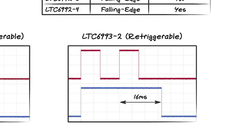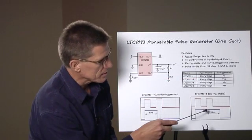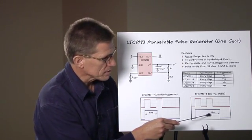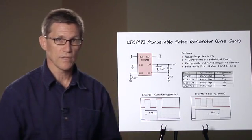The second scope photo shows the LTC6993-2, a retriggerable part in the same configuration being hit by the same input signal. In this case, the part acknowledges this second rising edge, is retriggered, and the pulse extends an additional 16 milliseconds.